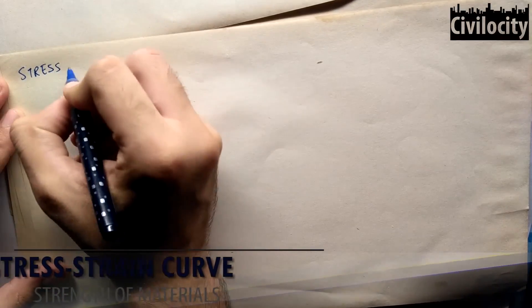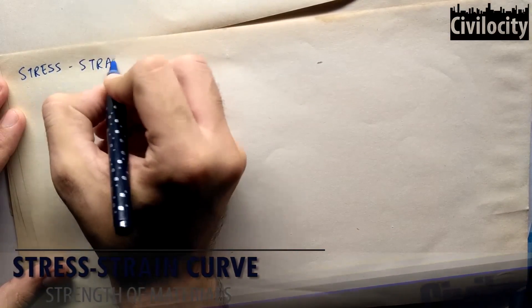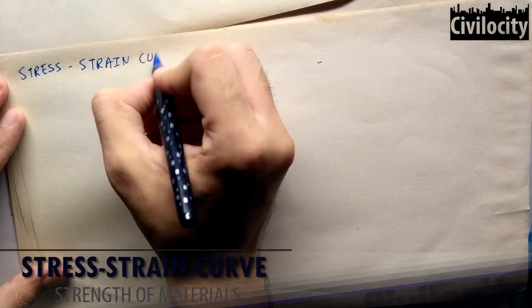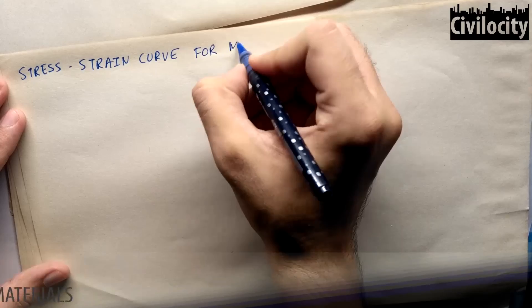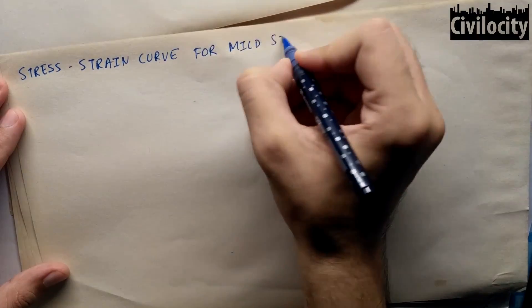Welcome to this video of strength of materials. In this video we are going to talk about stress strain curve for a mild steel specimen also known as low carbon steel, ductile steel or Fe 250 in engineering terms. So let's dive into this lecture.